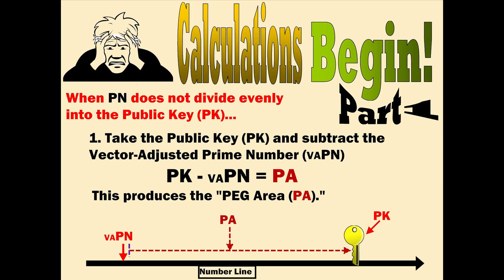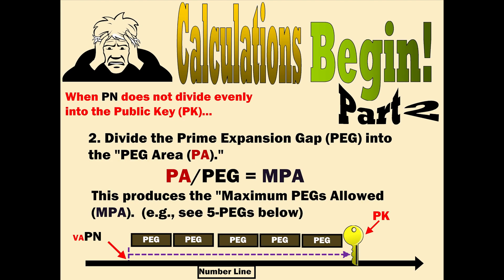When the prime number does not divide evenly into the public key, take the public key and subtract the prime number which has been vector adjusted so that it is in the same vector as the public key. If your prime number is already in the same vector as the public key, you do not need to vector adjust it. The public key minus your vector adjusted prime number will give you your peg area. Now, multiply your prime number by 12 to give you your prime expansion gap. Divide the prime expansion gap into the peg area to give you your maximum pegs allowed. If it does not evenly divide, you will get decimal expansion.